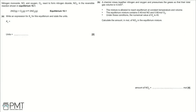NO(g) and O₂(g) react reversibly to form NO₂(g) in equilibrium 18.1. Part A: write an expression for Kc and state its units. In the Kc expression, all components are gaseous so all are included. Kc = [NO₂]² / ([NO]² [O₂]).